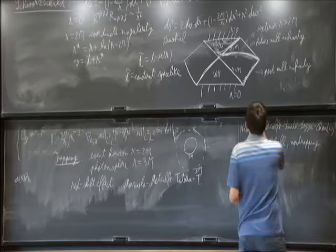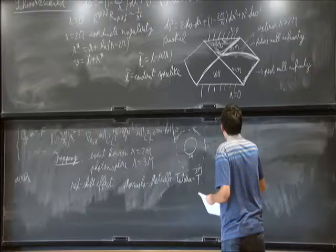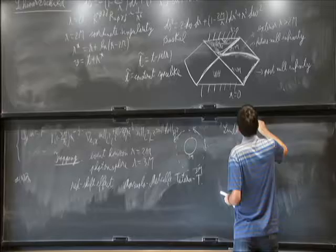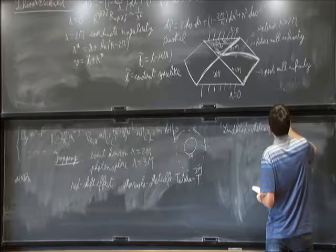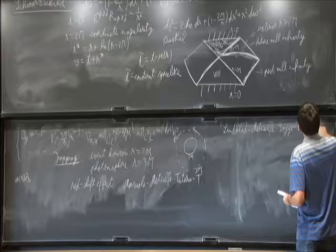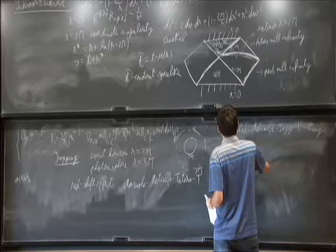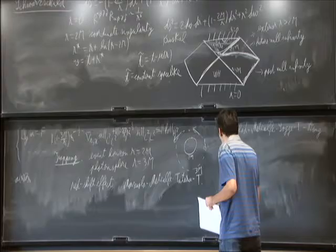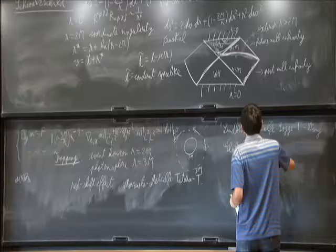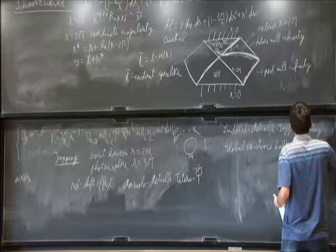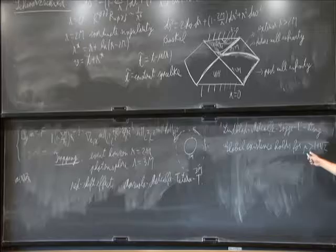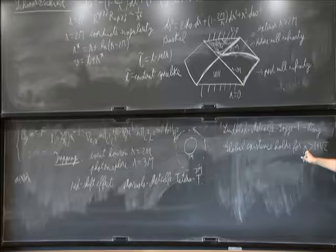So the theorem, in joint work with Hans Lindblad, Jason Metcalf, Chris Sogge, and Chengbo Wang, is that the Strauss conjecture — global existence — holds for the same range of exponents p > 1 + sqrt(2) on Schwarzschild. Let me also mention that for Schwarzschild the blow-up direction was settled in 2006 by Catania and Georgiev, who proved blow-up for p < 1 + sqrt(2).